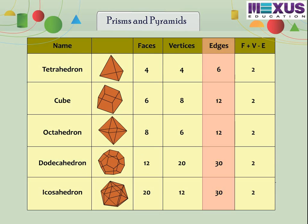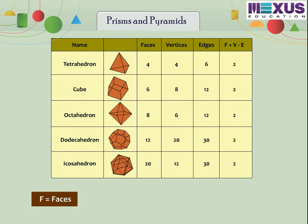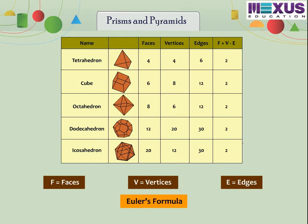Now, let's tabulate the number of faces, edges and vertices for the following polyhedrons. Here, F stands for number of faces, V stands for number of vertices and E stands for number of edges. From the last two columns, we find that F plus V is equal to E plus 2. Therefore, F plus V minus E is equal to 2. As we know, this relation is called Euler's formula.